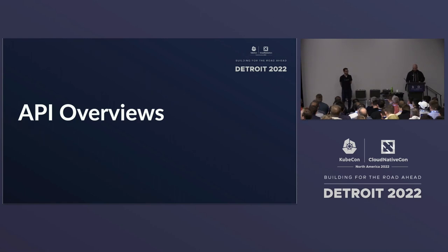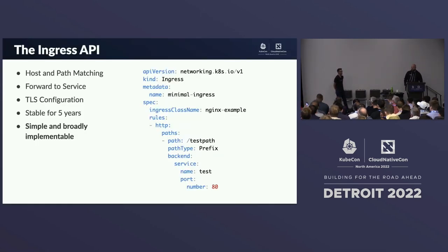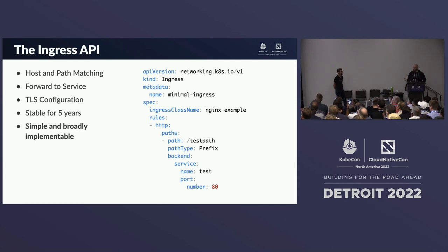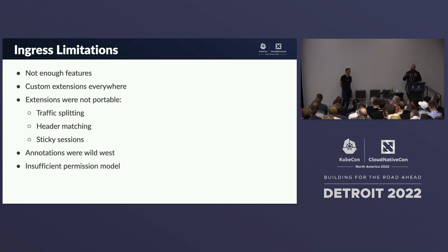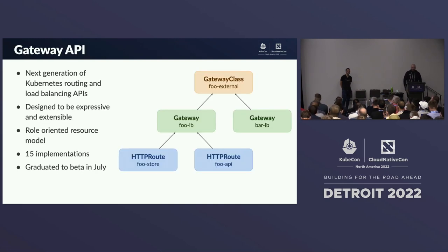Let's do an overview of these APIs. The Ingress API, which everybody's familiar with, is pretty simple — you can do host and path matching, forward to a service, and do TLS configuration. It's been around for a long time and there are 22-plus implementations. However, there are limitations: not enough features, leading to custom extensions everywhere. Extensions weren't portable — traffic splitting, header matching, and sticky sessions became an annotation wild west — and it had an insufficient permission model.